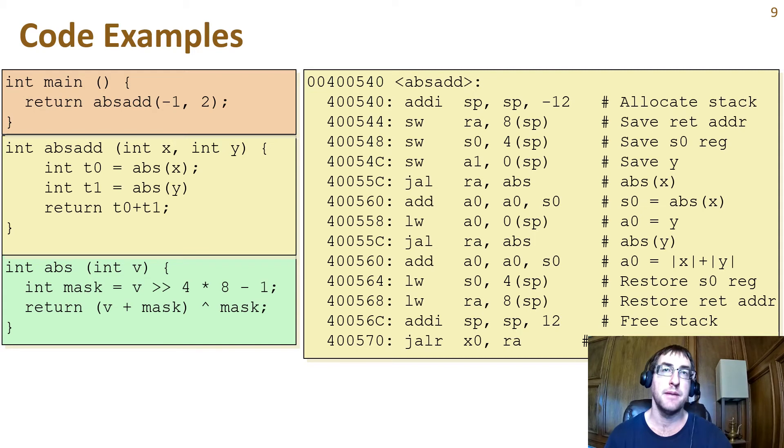Now let's see what happens in the absadd function. As with main, the first instruction adjusts the stack pointer, but this time by minus 12 to make room for three registers of storage, and then saves the return address onto the stack.